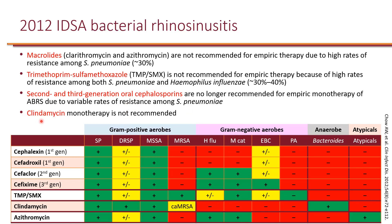Clindamycin is also associated with Clostridioides difficile and is likely to cause collateral damage. It does not have activity against gram-negatives, so clindamycin should be reserved as last-line for people who cannot tolerate other agents, and even then it should not be used as monotherapy — it should be used in combination.